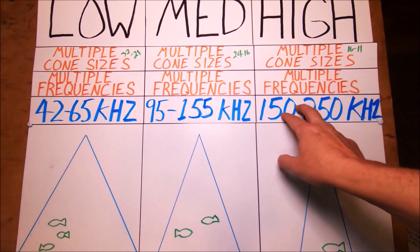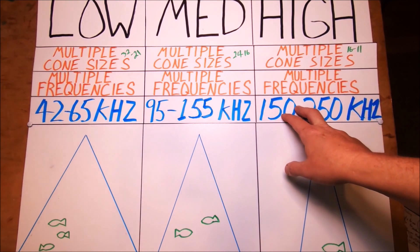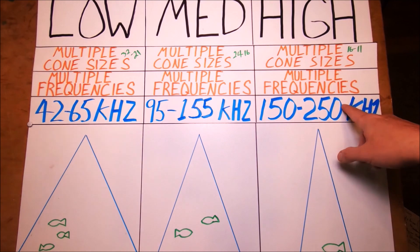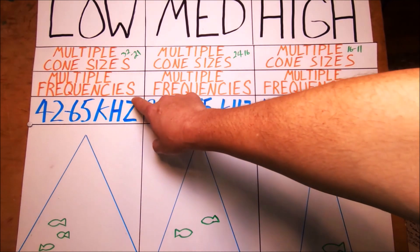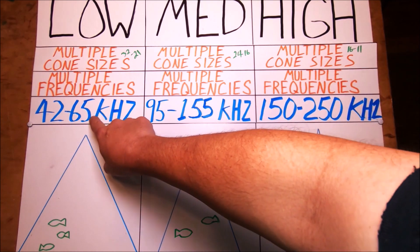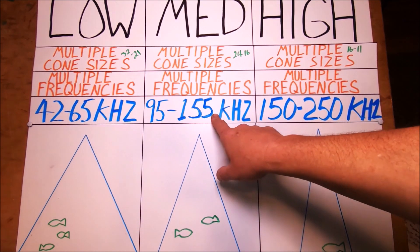We mean all the frequencies available to that transducer—that's your bandwidth. So in a high, your bandwidth is between 150 and 250. The low bandwidth here is between 42 and 65, and medium is between 95 and 155. This is your bandwidth.